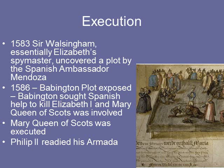In 1583, Sir Walsingham — essentially Elizabeth's spymaster — uncovered a plot by the Spanish Ambassador Mendoza. In 1586, the Babington plot was exposed: Babington sought Spanish help to kill Elizabeth I and place Mary Queen of Scots on the throne. Mary was involved. She was executed — and this was the last straw for Philip II. He readied his Spanish Armada to attack England. We see here a picture of the execution of Mary Queen of Scots.